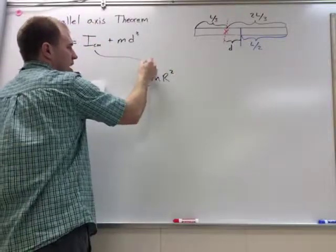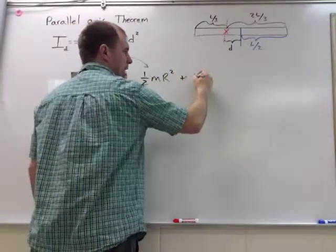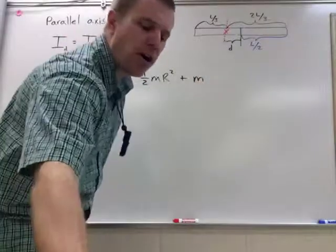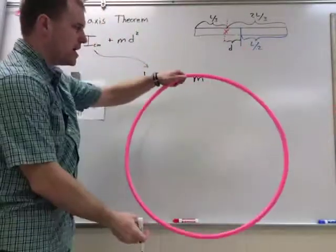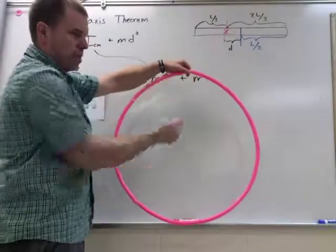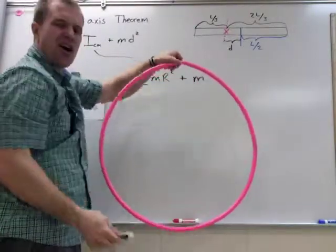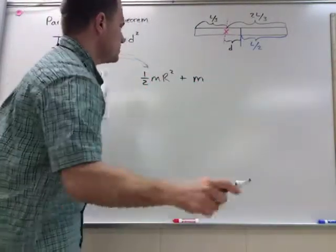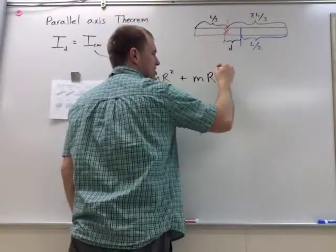That's the center of mass. Then I just need to add on the mass of the hula hoop. How far is my axis of rotation, right here at the end, from the center? Well, it's r away, so my distance is r.